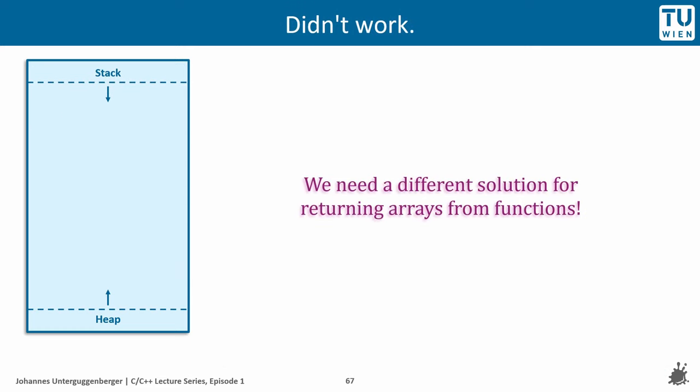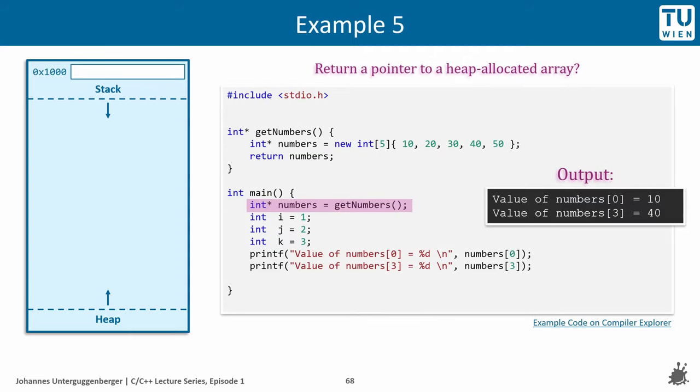Okay, so this approach did not work. How else could we return arrays from functions? This code listing shows a different approach. It uses a different implementation of the getNumbers function and preempting the result. This code will definitely produce the correct output. But let's take a look at the differences in detail. The invocation of the getNumbers function is already highlighted on the slide. Let's see what has changed.